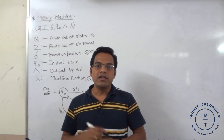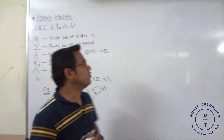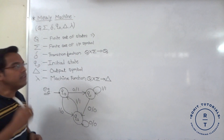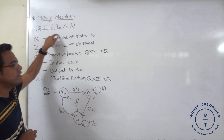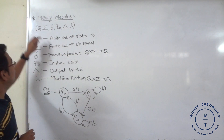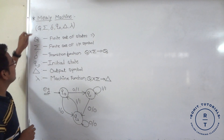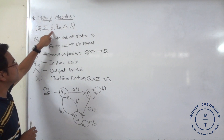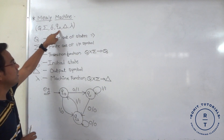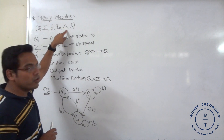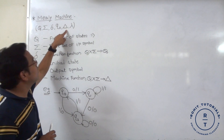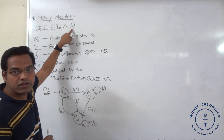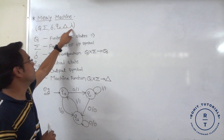So, basic things related to mille machine. Mille machine is also represented with the help of six tuples. First tuple is capital Q, next is summation, next is transition function, Q0 is the initial state, next is output symbol and last is nothing but the lambda, that is output function or we call it as the machine function.